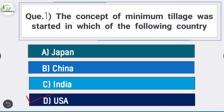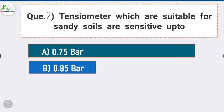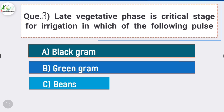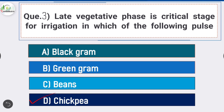Answer is option D - USA. The concept of minimum tillage was started in USA. Question number two: tensiometers which are suitable for scientific soil are sensitive up to - answer is option B - 0.85 bar. Tensiometers which are suitable for scientific soil are sensitive up to 0.85 bar.